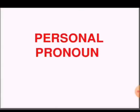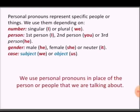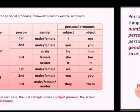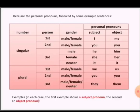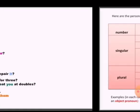First, we will study about personal pronouns. Personal pronouns represent specific people or things. We use them depending upon their number or person. We use personal pronouns in place of a person or people that we are talking about. Like 'I' changes into 'me', 'you' stays 'you', 'he' changes into 'him', 'she' into 'her', 'they' into 'them'.